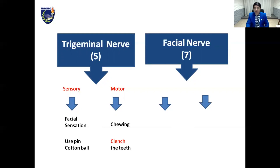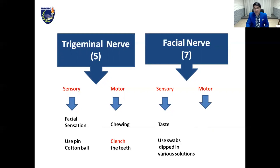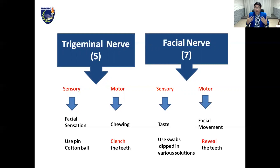The facial nerve — cranial nerve 7 — is also a sensory-motor nerve. Its sensory root is responsible for taste in the anterior two-thirds of the tongue, detecting sweet and salty tastes, assessed using swabs dipped in various solutions applied over the tongue while asking the patient to name the taste. The motor root is responsible for facial movement, assessed by asking the patient to frown, close the eyes, puff the cheeks, purse the lips, or reveal the teeth. Asking the patient to clench the teeth tests cranial nerve 5, not 7.